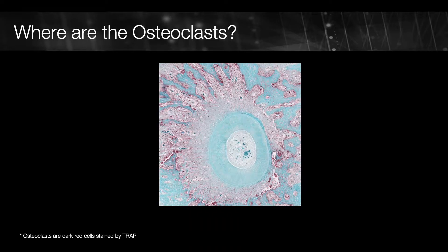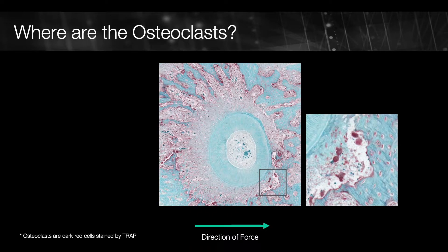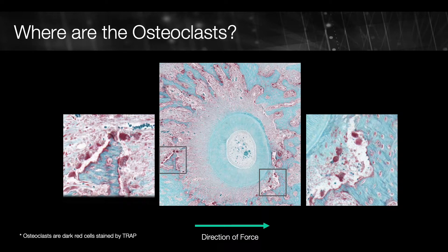Osteoclasts do not just appear on the compression side, as we taught before. Osteoclasts appear both on the compression and tension side. That is very obvious in histologic sections. In other words, bone resorption occurs both on the compression side and tension side.